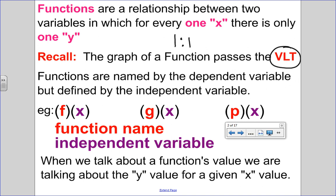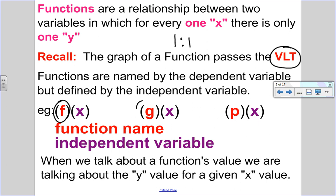Functions are named by their dependent variable. Here I have three different functions: f of x, g of x, and p of x. I can use any letter at all, and that letter is the name of the function. Inside each bracket is x, which is the independent variable — it can be any letter. It's just what each function uses to determine its value. So when we talk about functions, we're talking about the y value: x goes in, y comes out.